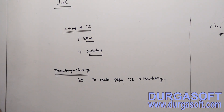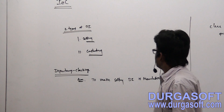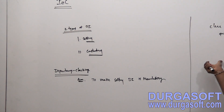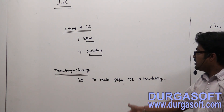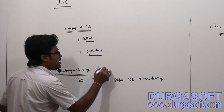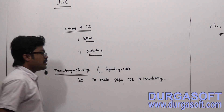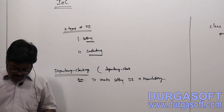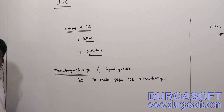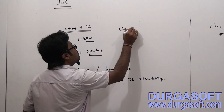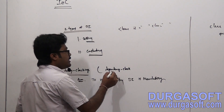Where do we apply this dependency check? For whichever bean you want to apply dependency checking, in that bean's declaration, you have to use one attribute called dependency-check, along with your bean id and bean class.